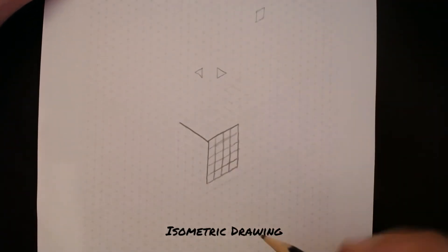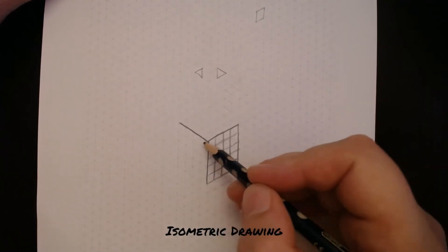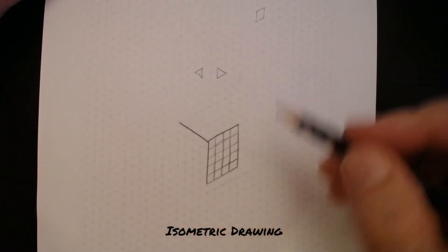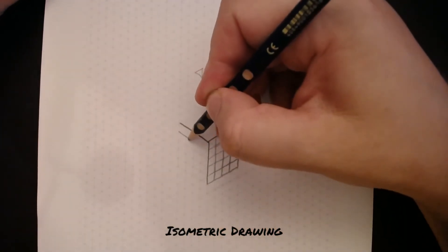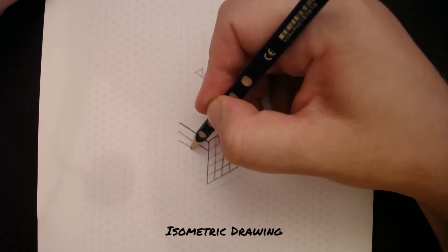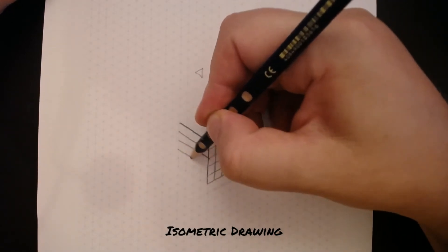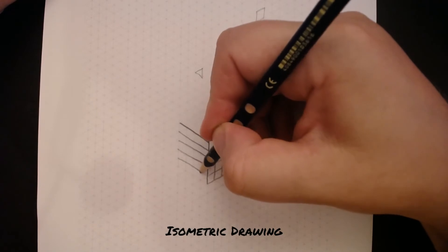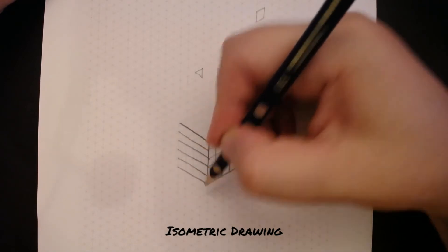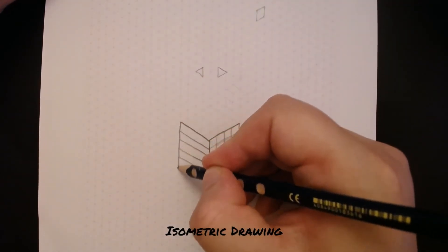You should also have lines that go up and to the left. Now if we take these lines that go up and to the left, we should be able to make another set of squares, and these squares look like this.